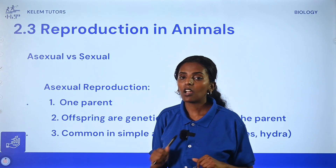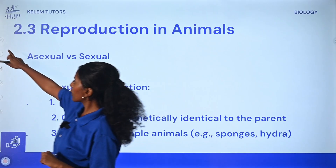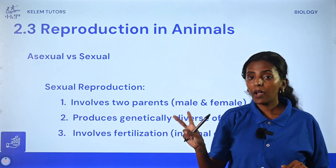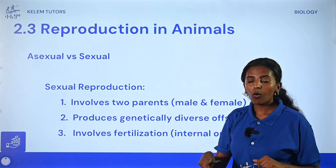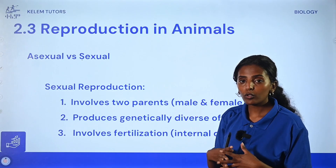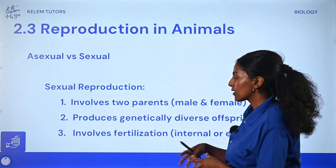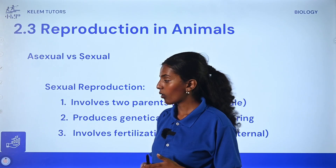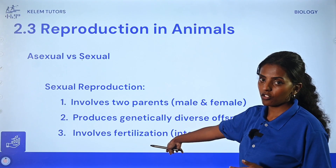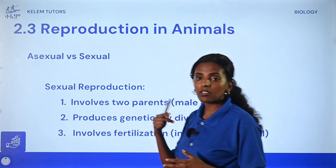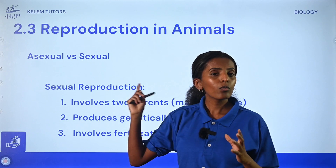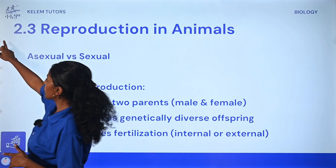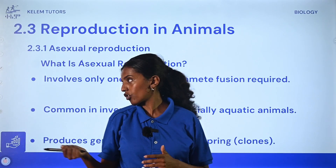The second type of reproduction is sexual reproduction. In this case, we need two parents, because the offspring would have the genetic material of both parents, making it genetically diverse. It involves fertilization, which is the fusion of two gametes — two sex cells, the egg and the sperm cell.